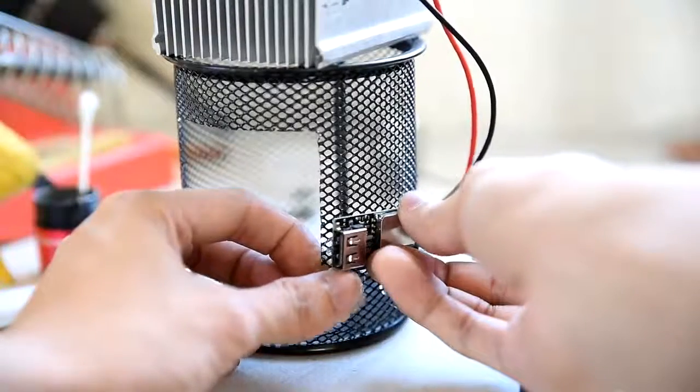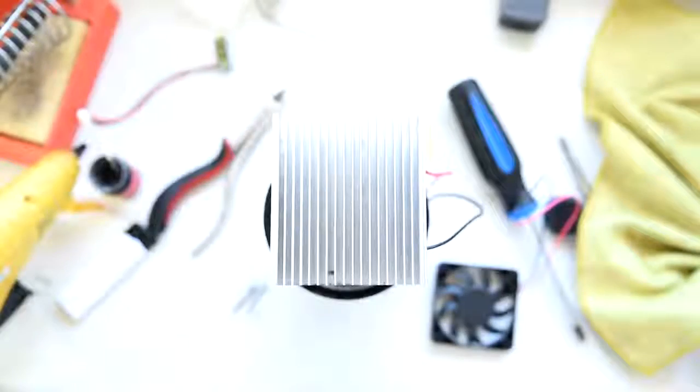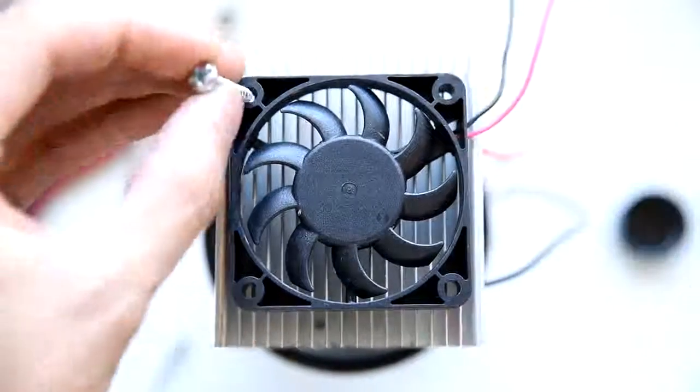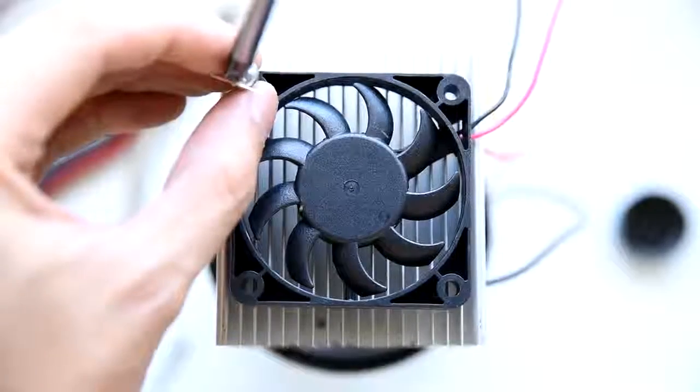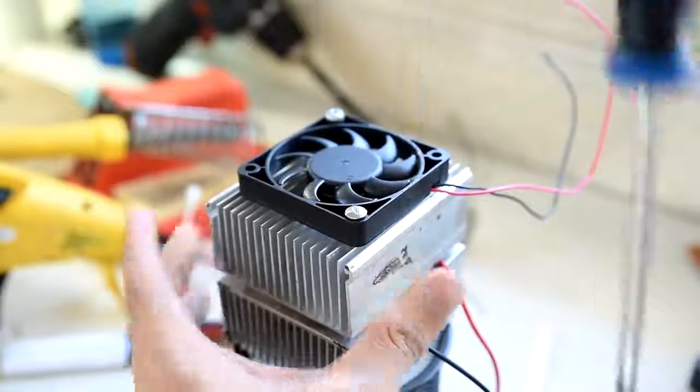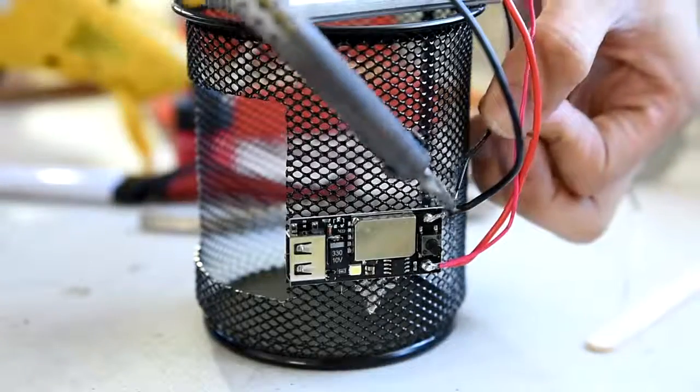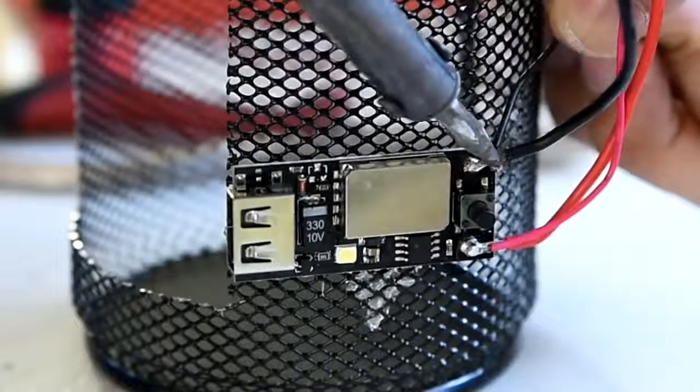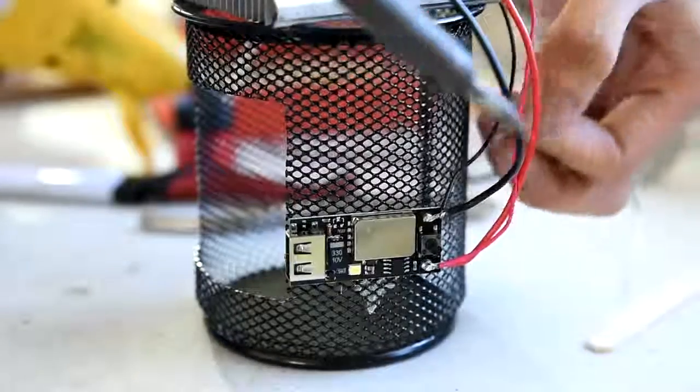For a peltier to work, you must provide heat on one of its sides, then cool down the other side. Now, installing the self-sustaining cooling fan would be the finishing touch to this project. Just simply screw it in place. Last but not least, you'll have to solder the power lines of the cooling fan to the peltier's power output.